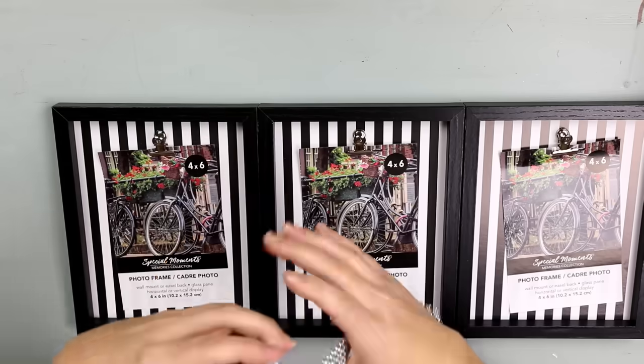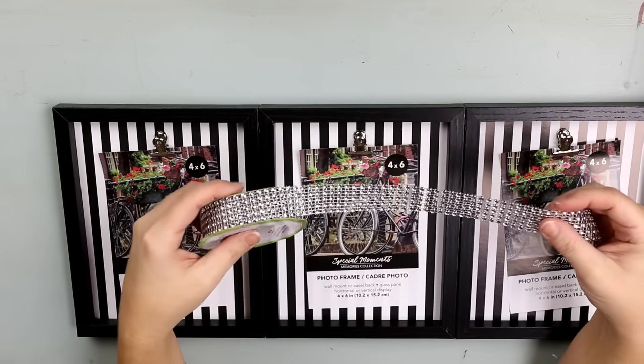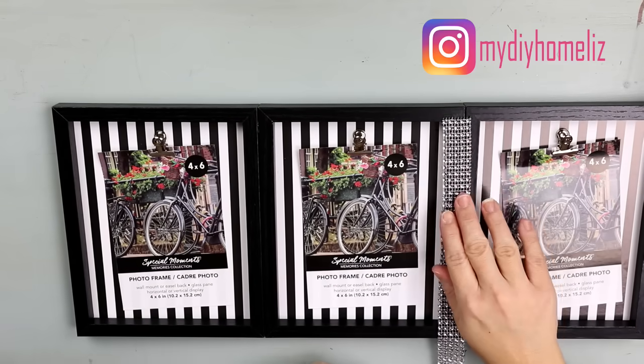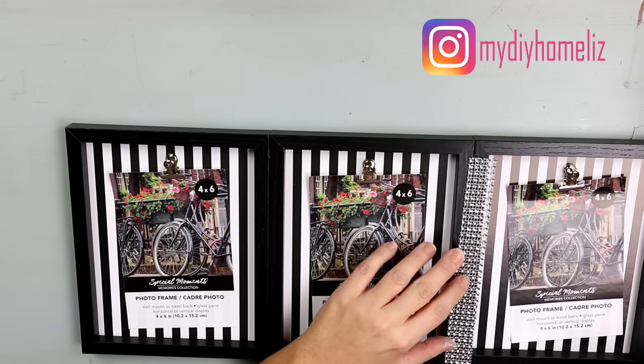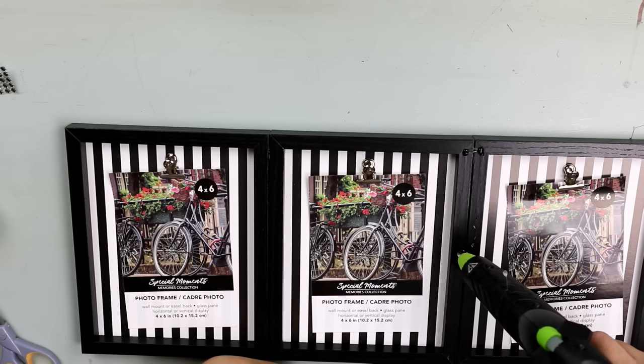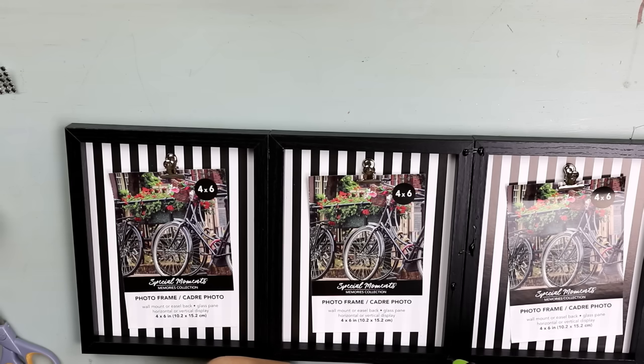Next I'm going to come in with this diamond wrap that you can pick up at Dollar Tree and I'm just going to glue it down the length of my frame on either side. So you just want to cut it off so that it's perfectly the correct size of your frame.